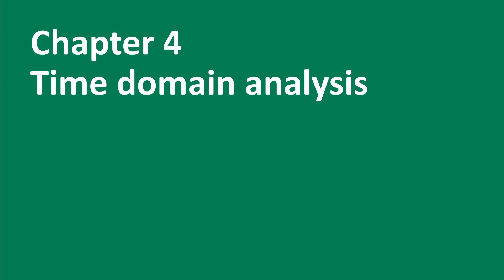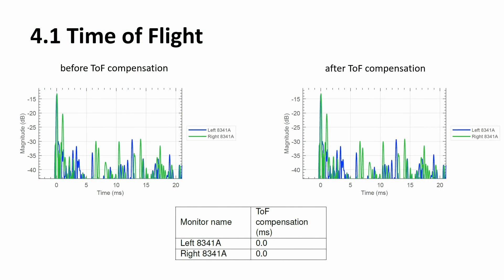Chapter 4: Time domain analysis. Ideally, all speakers should have the same distance to your listening position. In a stereo system this is usually easy to fulfill — just measure the distance. But in an immersive setup with many speakers, it's sometimes not possible to mount them at exactly the same distance. Therefore we use time of flight compensation: GLM detects the differences in distance and automatically compensates for it. This graph shows the time of flight before and after calibration. For my stereo system they look identical because no time of flight compensation was applied.